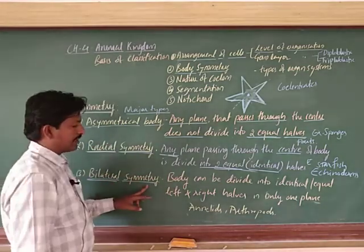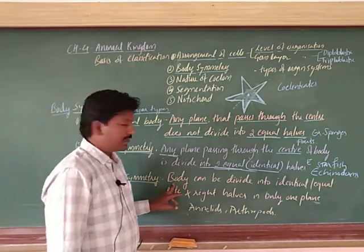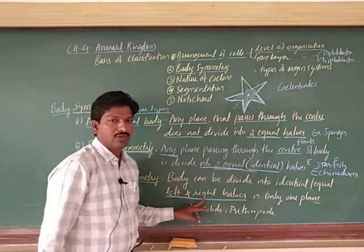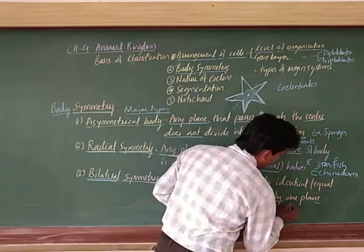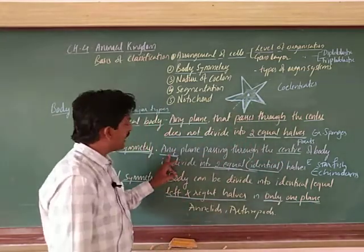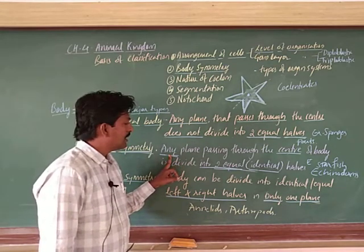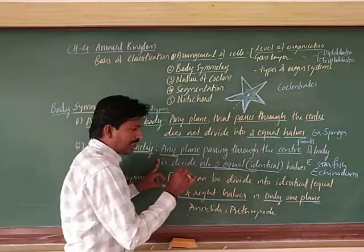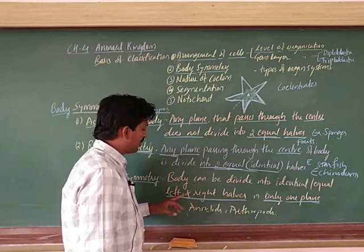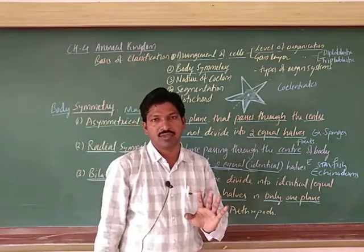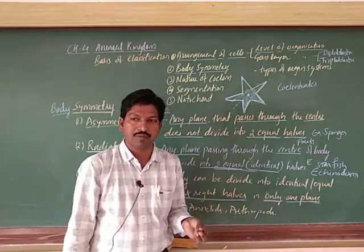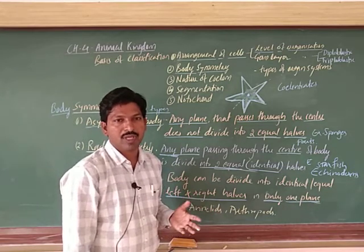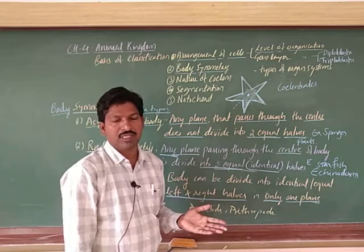Next is bilateral symmetry. The body can be divided into identical or equal left and right halves, but only in one plane. That plane passes through the central axis of the body and divides it into left and right halves. Man is an example showing bilateral symmetry. Almost all higher animals show this. From Pisces - fish also show right and left appearance as the same.